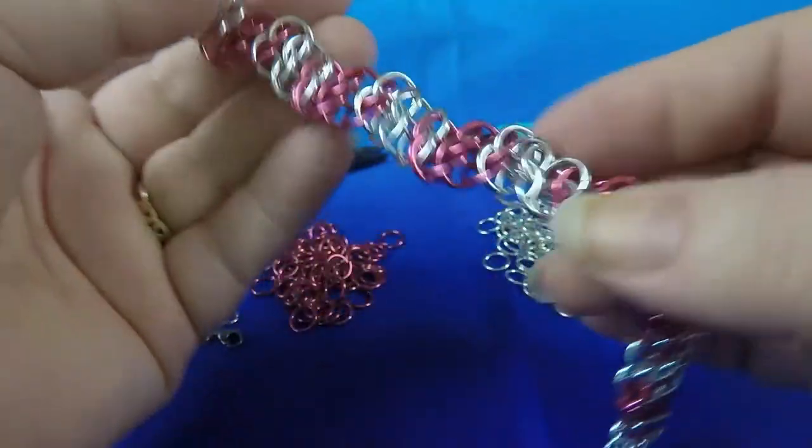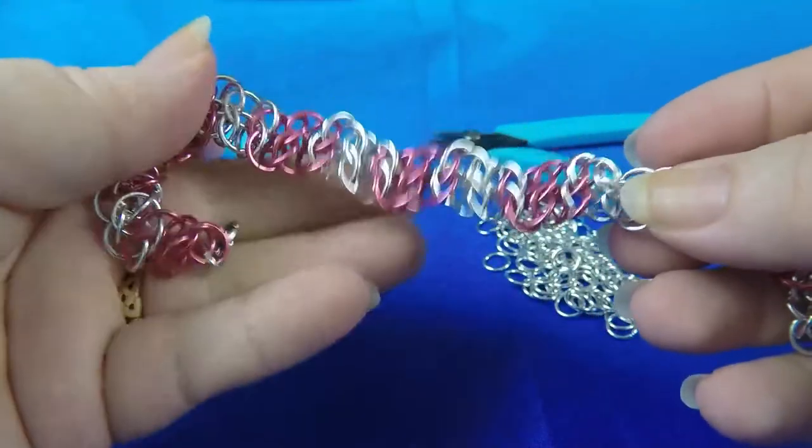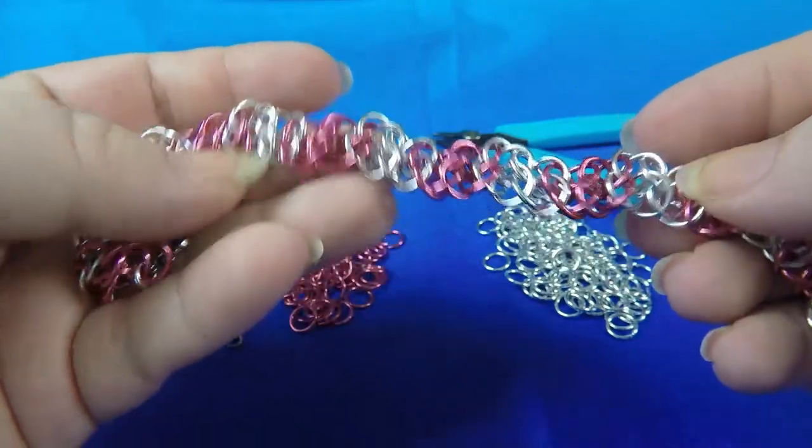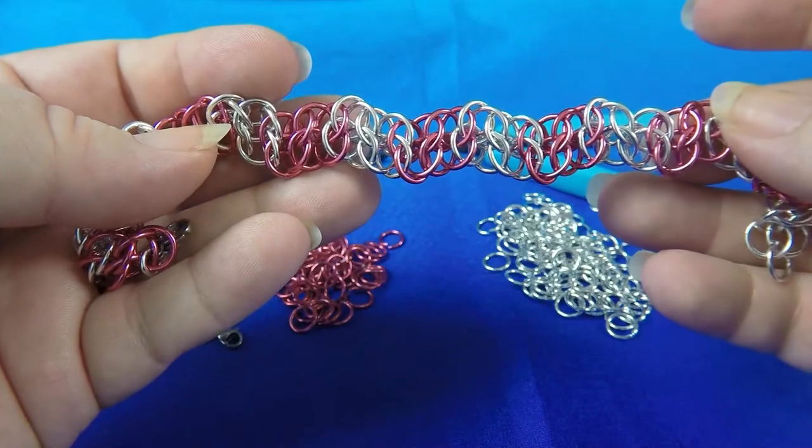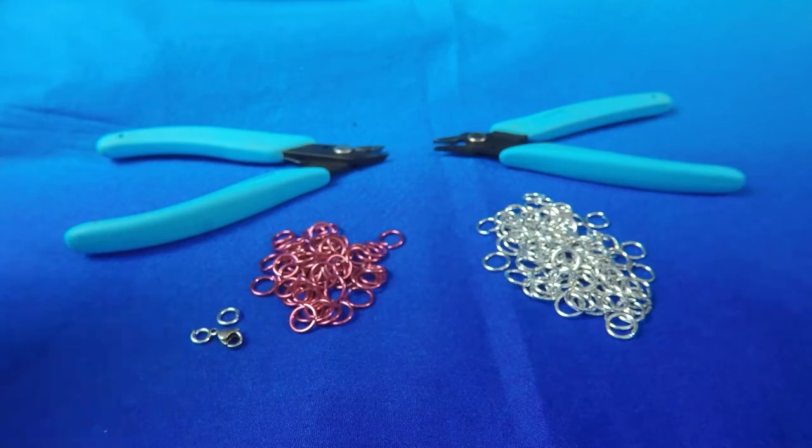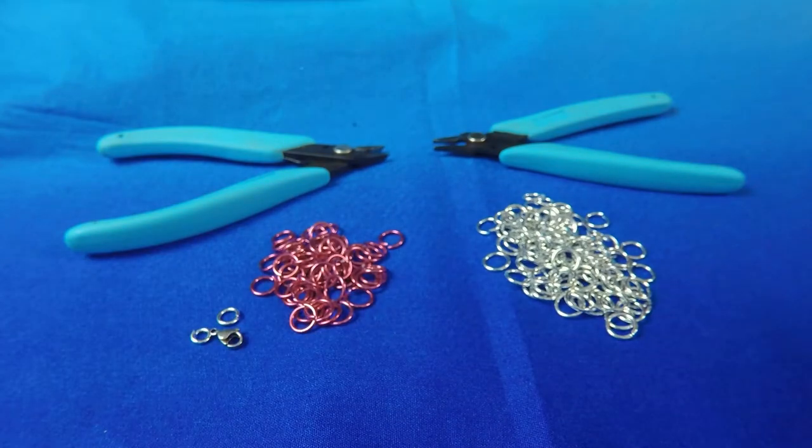This is the project we will be completing this week, it's the GSG Zig Zag Bracelet. So you can see that very subtle zigzag effect that the bracelet has. Now these materials are for an 8 inch or 20 centimeter bracelet length, so just adjust that as you need.